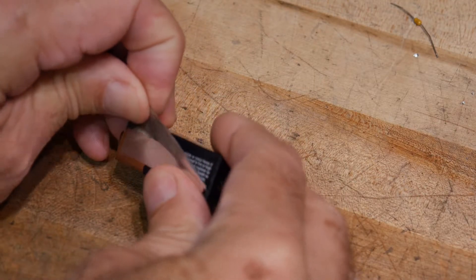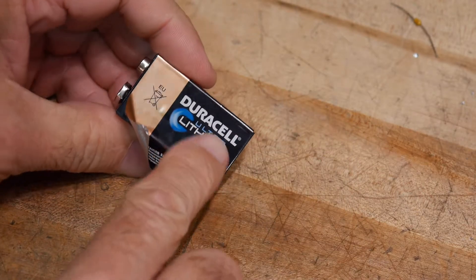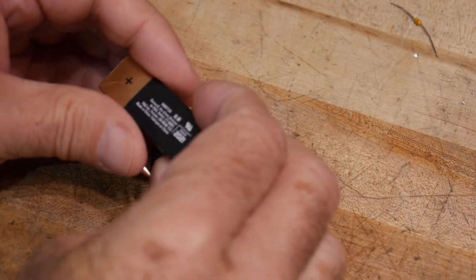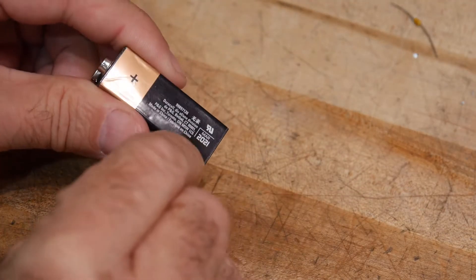This is the Duracell Ultra Lithium battery. It says March 2021 so it should be good to 2021, yeah right.